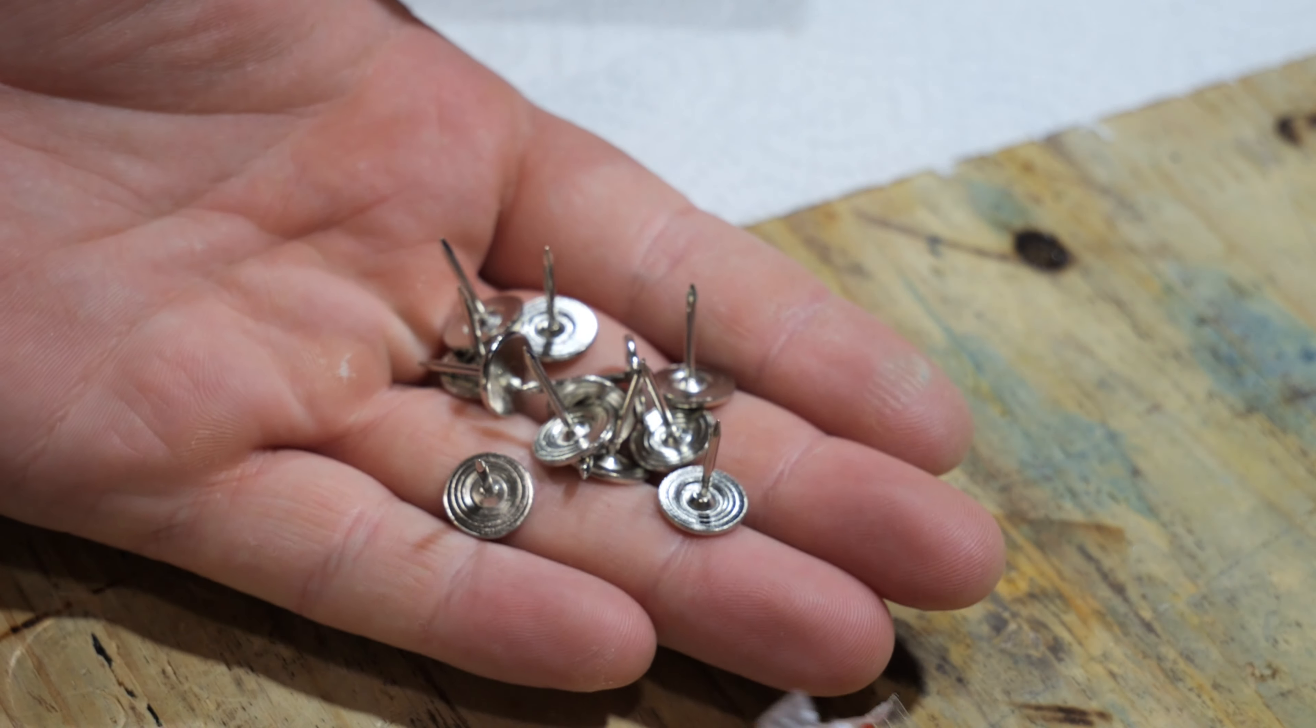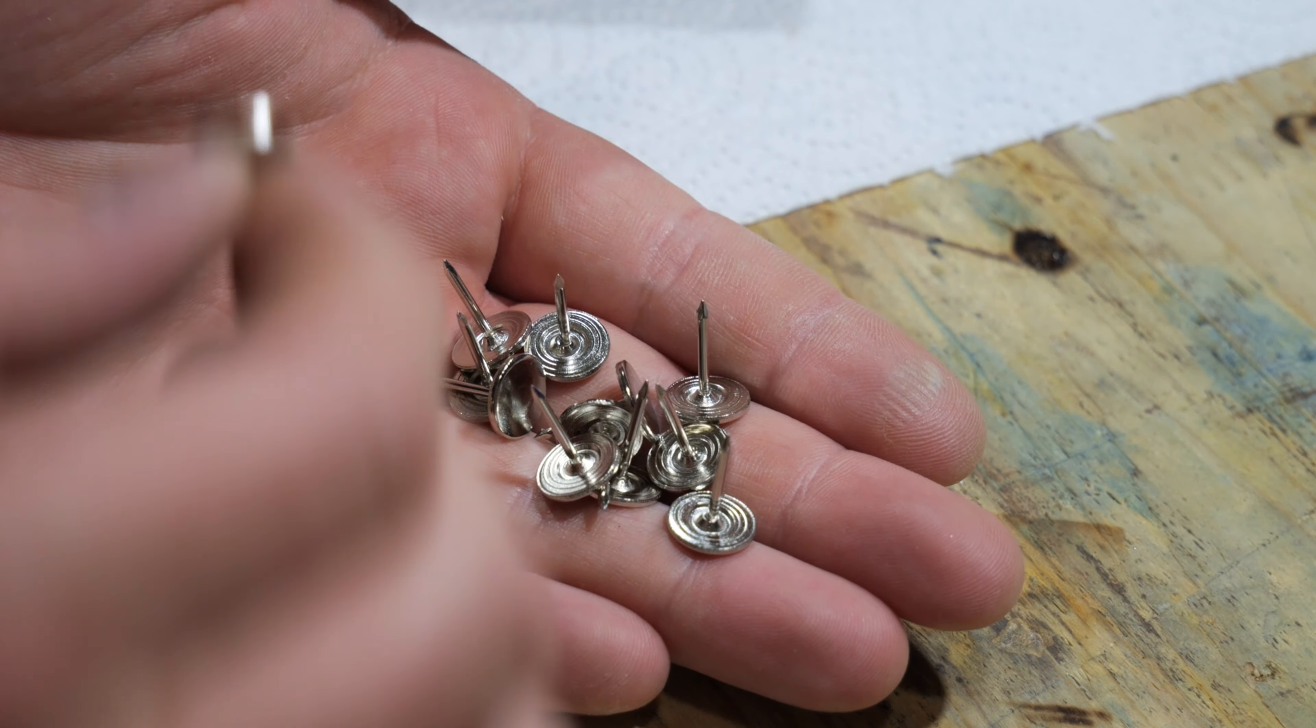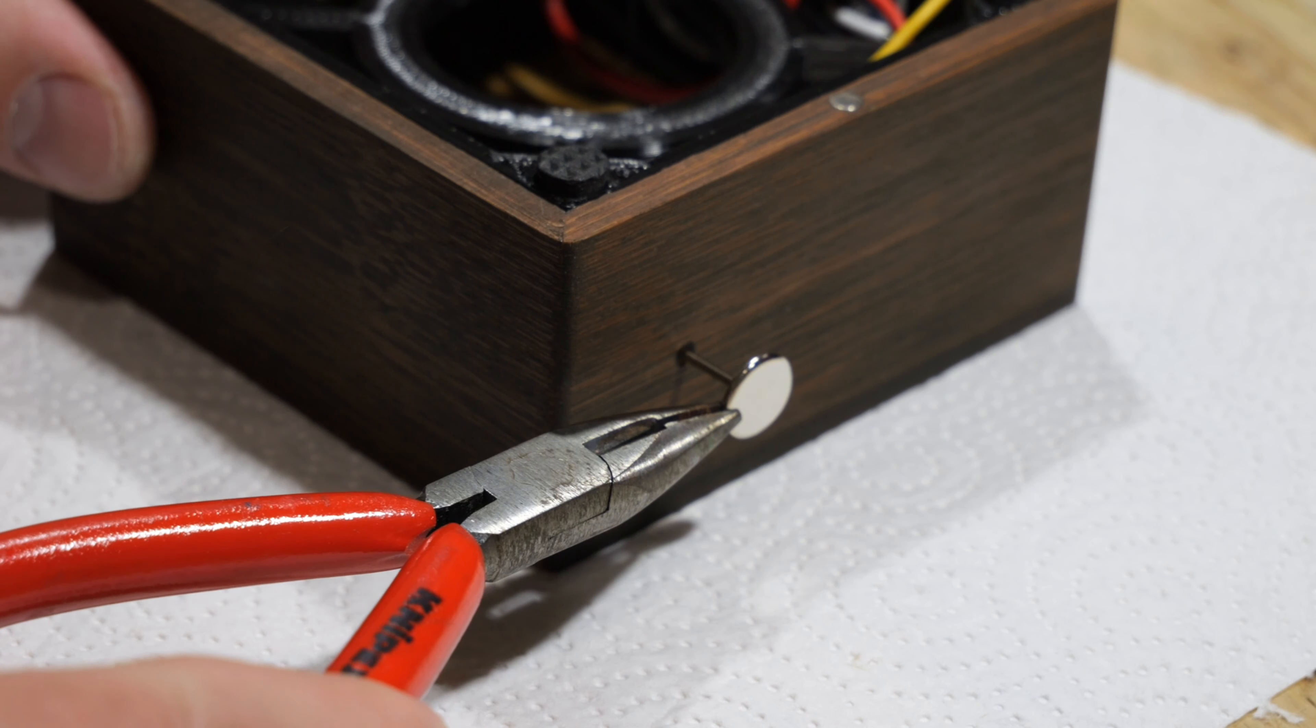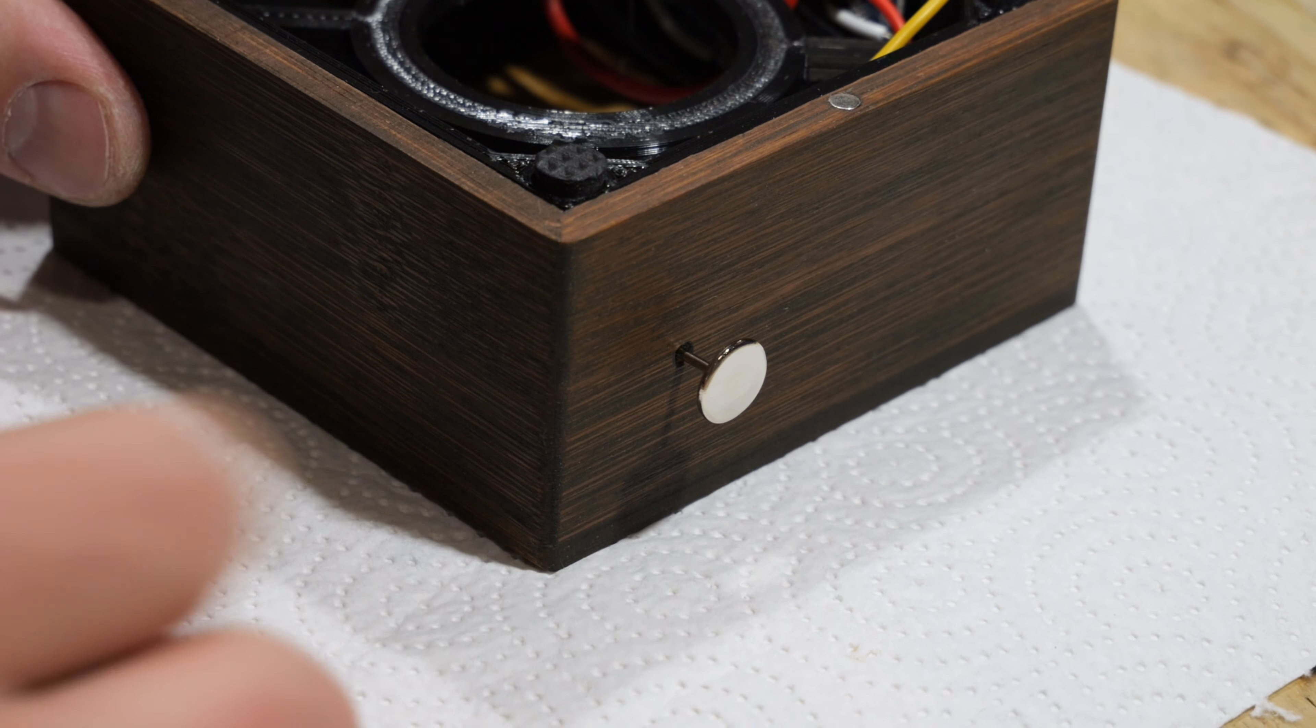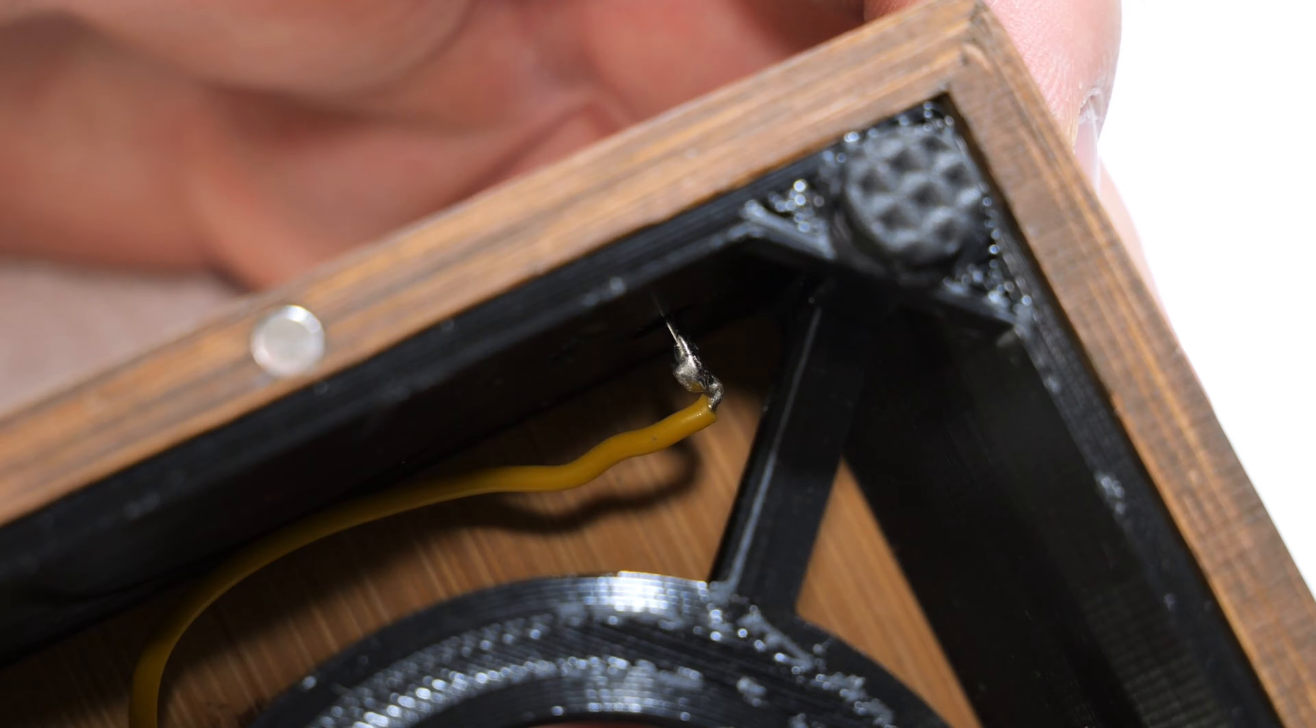As a touch sensor I use this chrome plated nail, which can be pushed through one of the previously drilled holes. Then the sensing cable of the Arduino is soldered to the back of the nail.